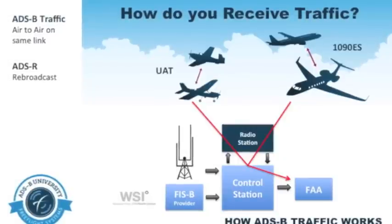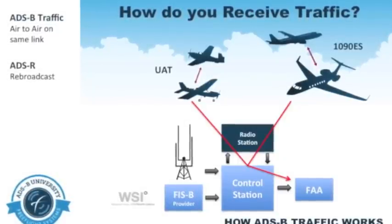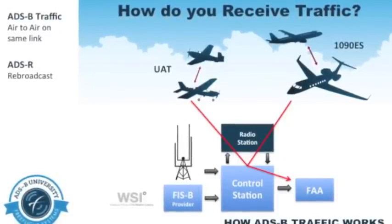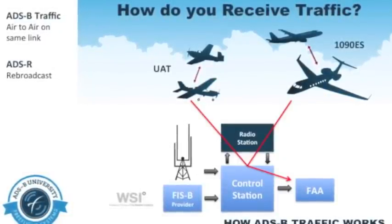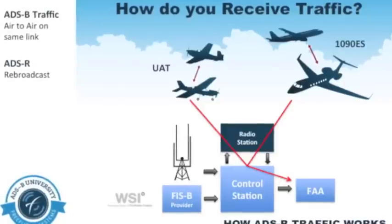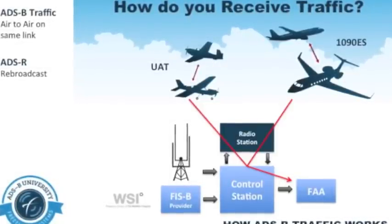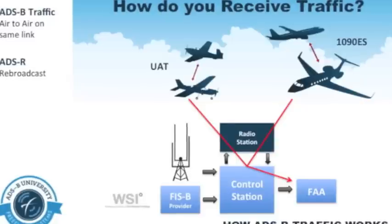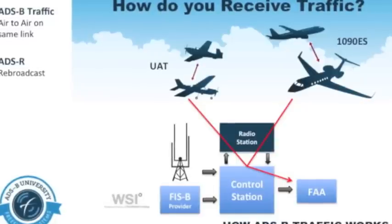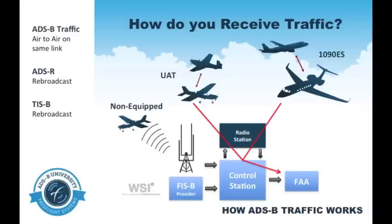Here you can now see more of the inner workings of the ADS-B network, and how this system is communicating internally with air traffic control, 1090 equipped aircraft, 978 equipped aircraft, and how WSI, the FISB provider, is incorporated into this network. The third and final way you will receive traffic data is through TIS-B, or Traffic Information Services Broadcast.